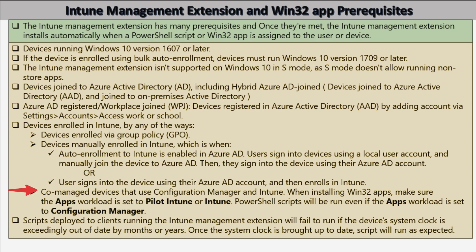For co-managed devices using Configuration Manager and Intune, when installing Win32 applications, the app workload must be set to Pilot Intune or Intune, but PowerShell scripts will run even if the app workload is set to Configuration Manager. Lastly, script deployment will fail to run if the device's system clock is exceedingly out of date by months or years; once the system clock is brought up to date, the script will run as expected.